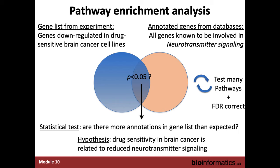What does pathway enrichment analysis really do? This can be visualized with a simple Venn diagram. In blue, you have a gene list identified as particularly active in your experiment of choice. In orange, you have a previously annotated list of genes known to be involved in a particular process — for example, neurotransmitter signaling, accumulated over time into a particular database. Using a statistical enrichment test such as a Fisher's exact test, you ask: are the neurotransmitter genes particularly highly enriched in my experimentally derived gene list? If true, you may pose a new hypothesis that neurotransmitter signaling is somehow related to your experiment.